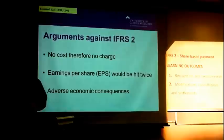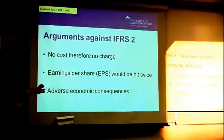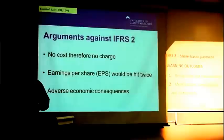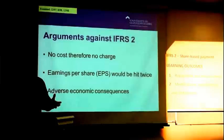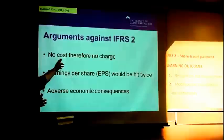IFRS 2 was quite controversial when it was created because a lot of companies, mainly in the US but elsewhere in the world too, didn't want to recognise their share option schemes or share-based payments for three main reasons. The first objection was that there's no cost to the company — they're issuing shares, no money is changing hands, and therefore they said there's no charge. The International Accounting Standards Board said that's not true: directors and employees are providing services which have a cost, and if they're expecting shares in return then there is a transaction that can be measured in value terms. So it's not true that there is no cost or charge.